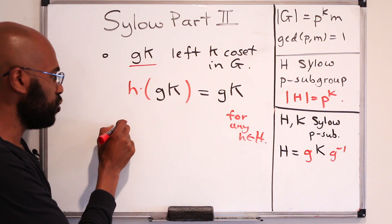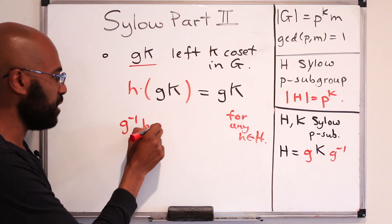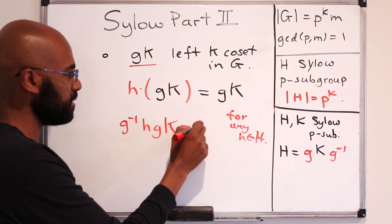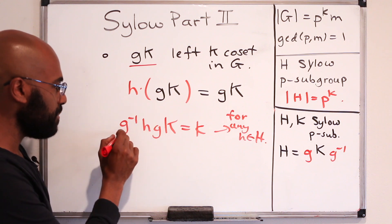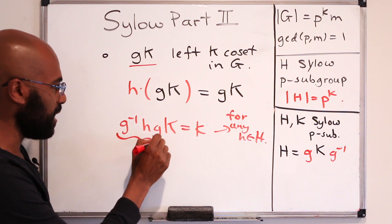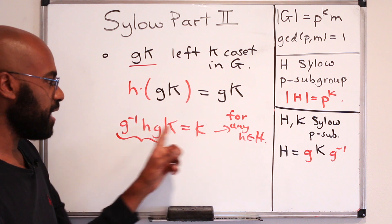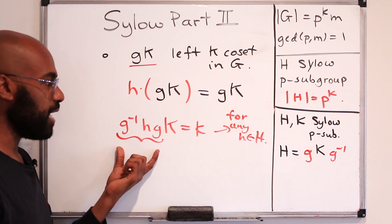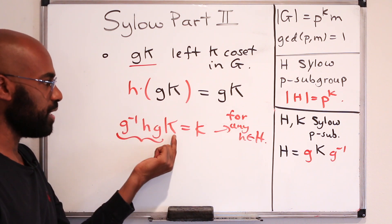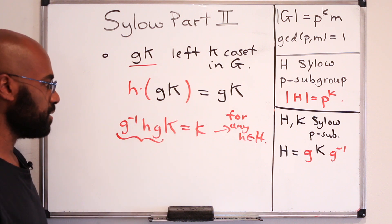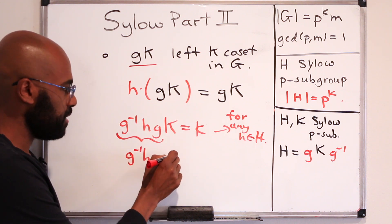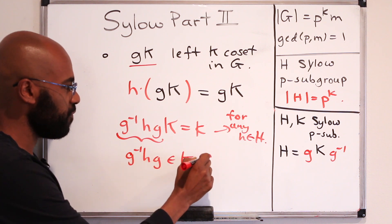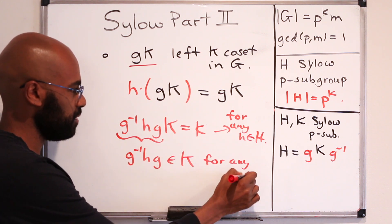So it seems like we're actually getting close to this concept here. If we rearrange this, this is saying that G inverse HG times K is K for any H in H. Okay, so what that means then is if we look at this element right over here for a particular value of H, this is going to be in K because this times something in K is something in K itself. Okay, so this object here is an element of K for any H in H.